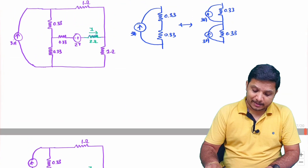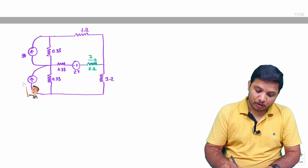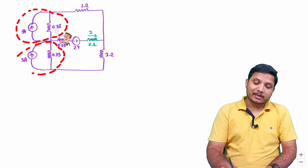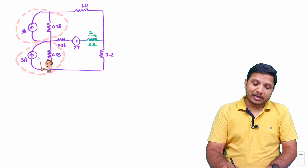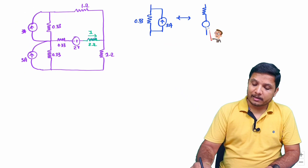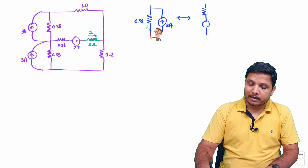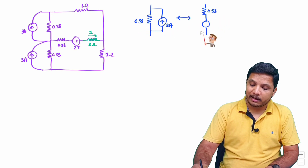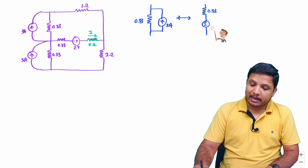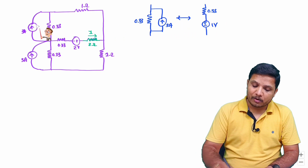I have connected this current source across both branches with a value of 3 amperes in the upward direction. We can clearly observe this current source in parallel with the resistor, so I apply source transformation again — that makes a battery connected in series with the resistor. The voltage is V equals IR, so 3 times 0.33 equals 1 volt, with direction minus-plus.